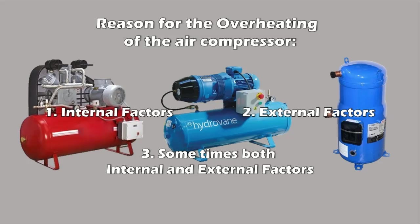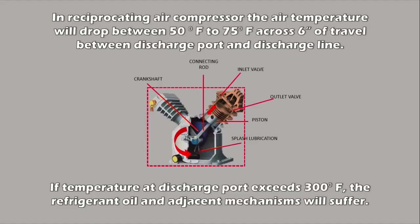In a reciprocating air compressor, for example, the air temperature will drop anywhere from 50 to 75 degrees Fahrenheit across the roughly 6 inches of travel between the discharge port and discharge line. If the temperature at the discharge port exceeds 300 degrees Fahrenheit, the refrigerant oil and adjacent mechanisms will suffer. The temperature at the discharge line should never exceed 225 degrees Fahrenheit, as anything hotter would put the discharge port dangerously above 300°F. If the temperature exceeds 350 degrees Fahrenheit at the discharge port, the heat could lead to imminent system failure.